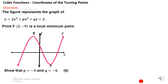Now I have another example from another past examination paper. The figure represents the graph of y = 2x³ + px² + qx + 3. Point F, which is (2, -9), is a local minimum point. Show that p = -5 and q = -4. In this particular exam, learners were given 6 marks for doing this calculation.